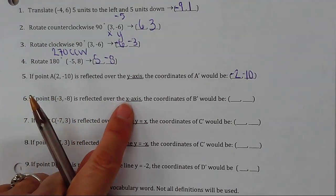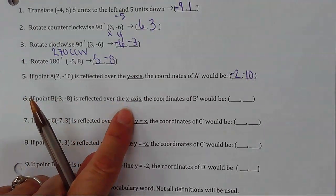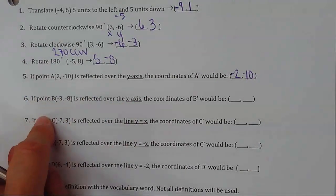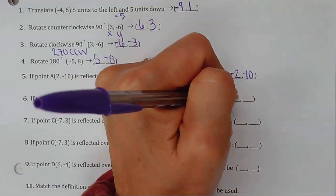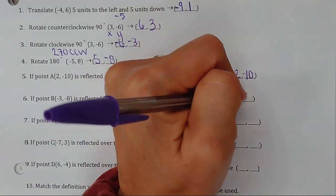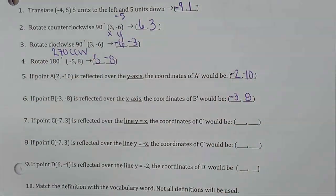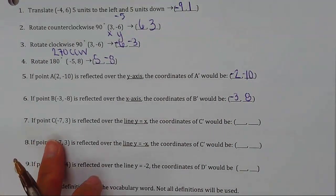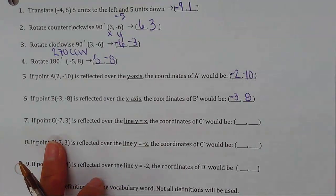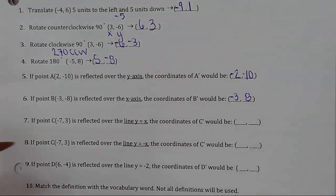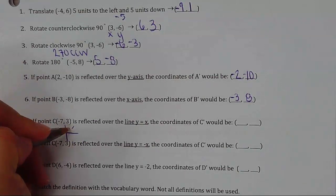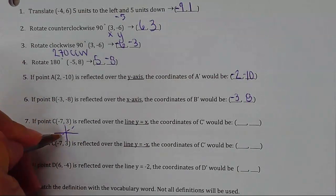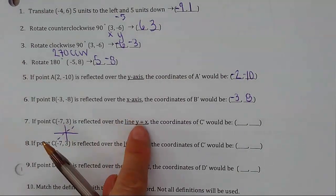If you reflect over the x-axis, the y becomes opposite, so negative 3, positive 8. And if point C is reflected over y equals x — remember that's a line with a positive slope — the x and y switch places.